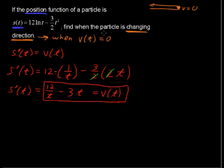So now we want to know when is the particle changing direction. We could plug in, we could say what is the velocity at 5 seconds if we're dealing in seconds. We could find that. We could just plug in v(5) and plug in 5 here. We've got 12 over 5 minus 3 times 5, and you simplify that. But that's not what we're being asked to do right now.